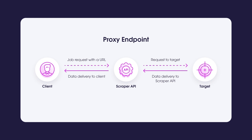Similarly to real-time, the proxy endpoint integration method is synchronous and for the most part works in the same way. The biggest difference is how you provide the initial job request information. With this method, you use our scraper API endpoint as a proxy server. Unlike real-time, instead of a JSON, you should provide a URL and some headers or cookies you would like to pass on to the target you want to scrape. If you are already familiar with proxies and how they work, you might want to opt for this integration method due to its convenience and ease of use — all you need to do is change the proxy address in use and we'll do the rest. The proxy endpoint method requires the least changes on the client side.